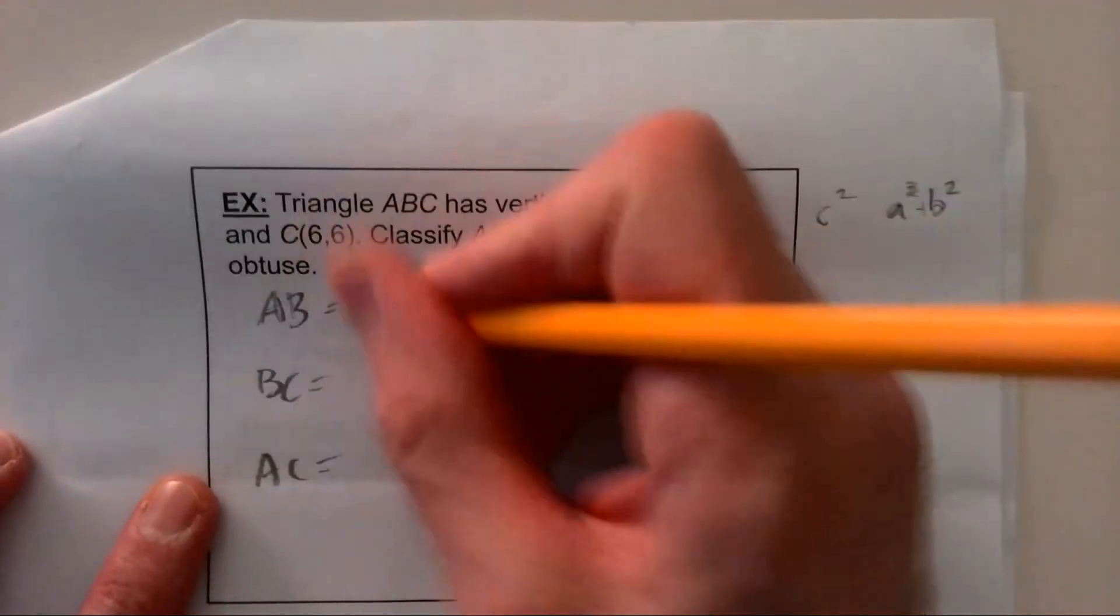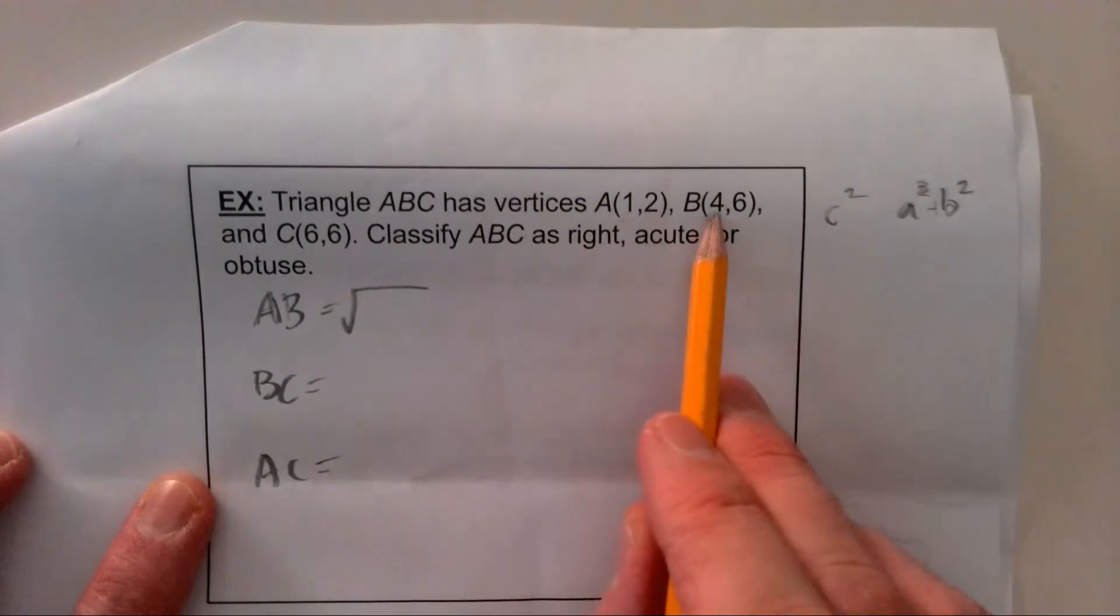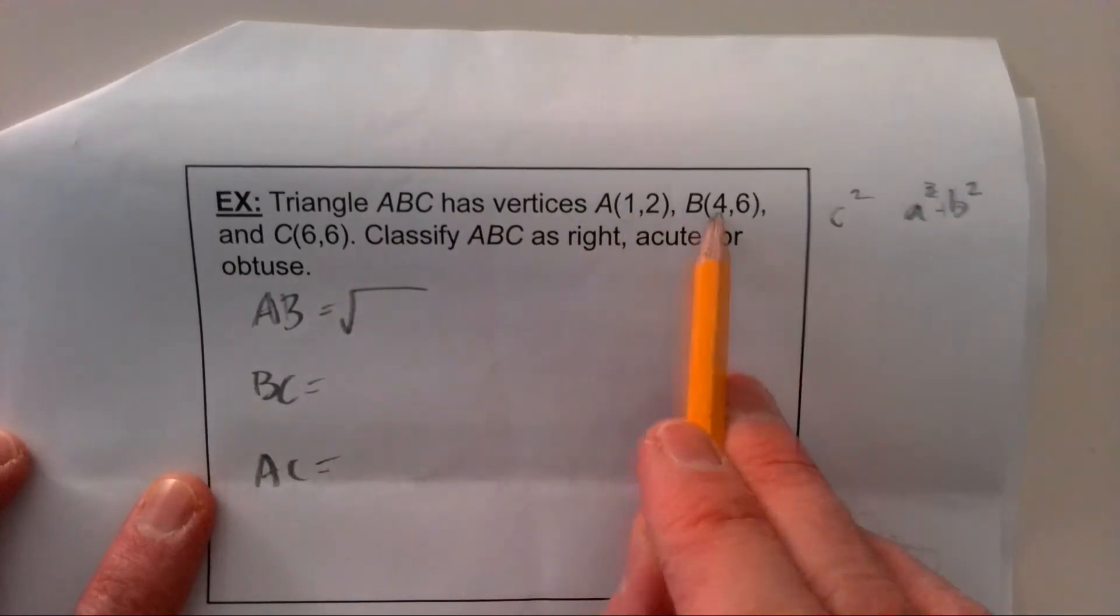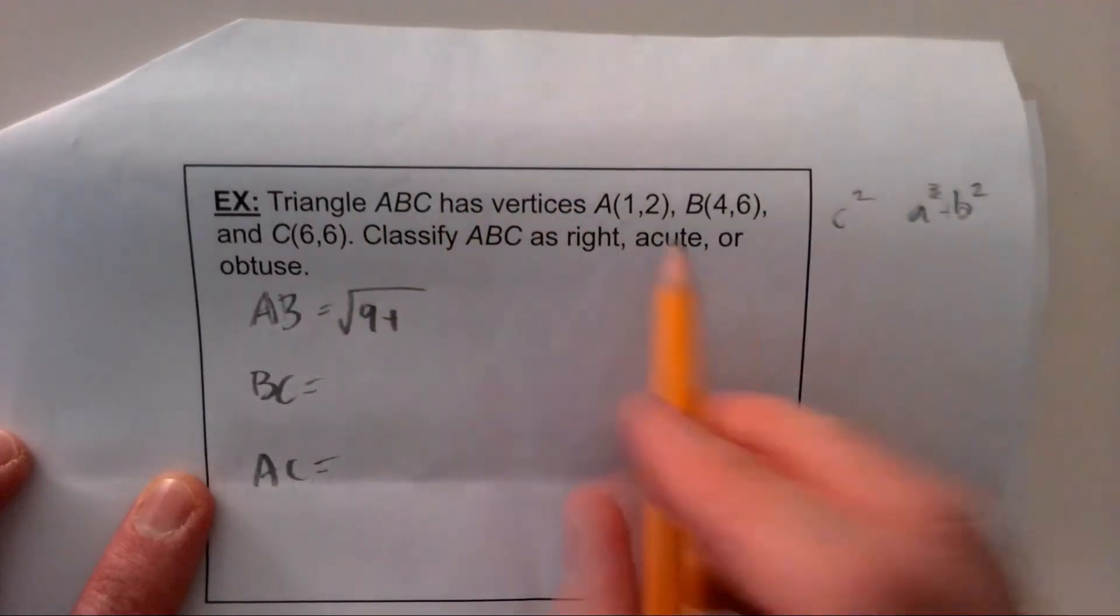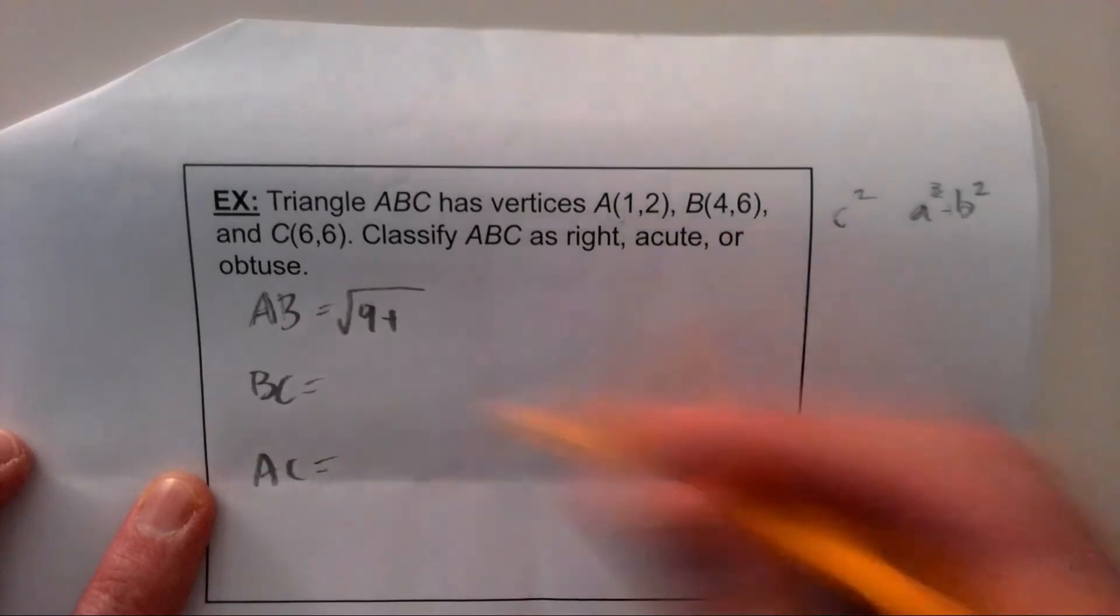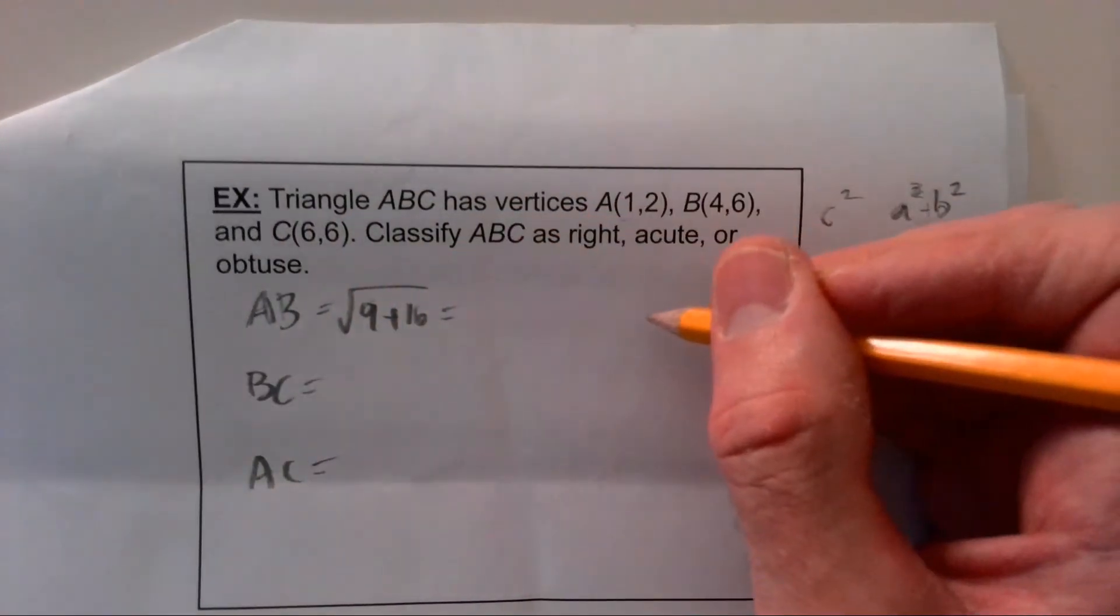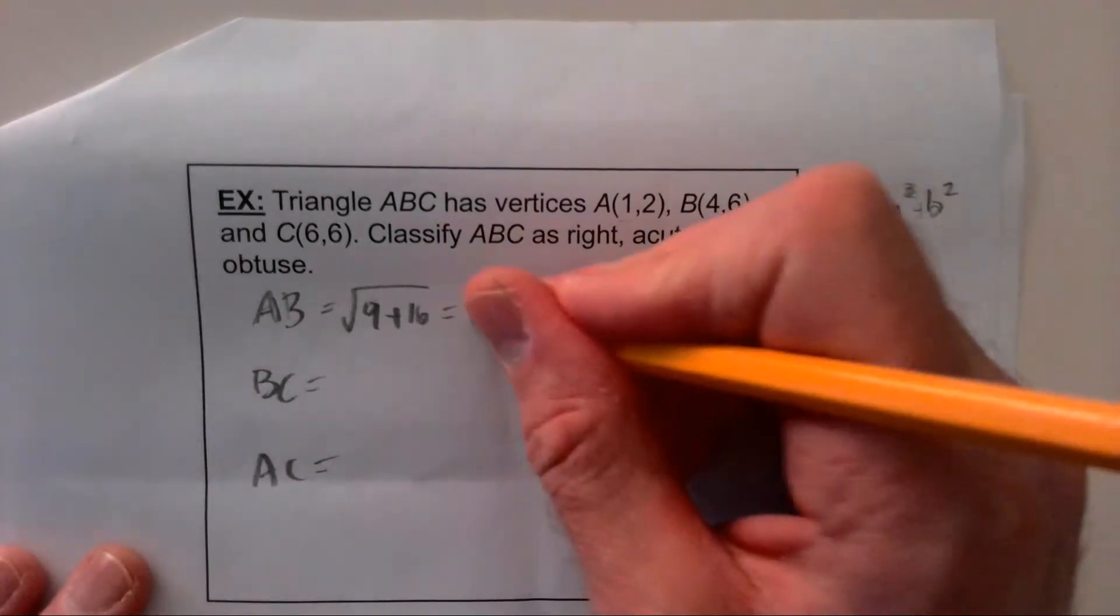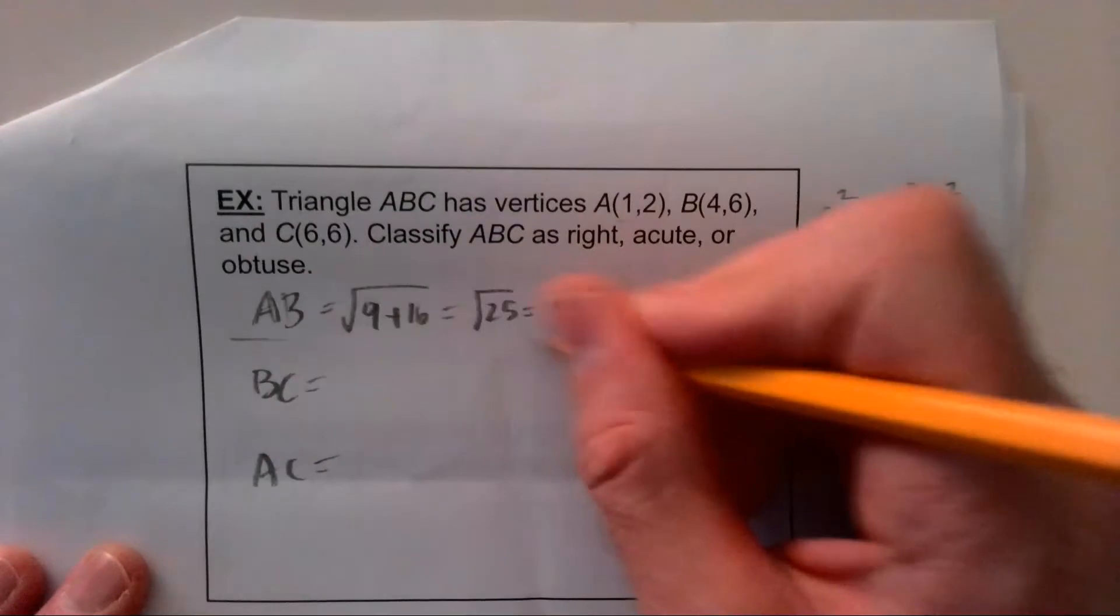I'm going to go ahead and just write in what it'll say. So AB, the change in x's is 3, and you have to square that. 3 squared is 9. The change in y values is 4, and the square of 4 is 16. 9 plus 16 is 25, so you get a 5. So AB is 5.